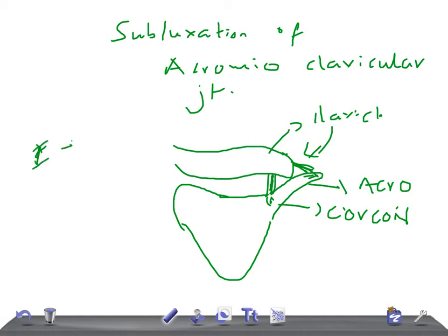Grade one is a minimal strain to the acromioclavicular ligament and joint capsule. Whereas in grade two, we have rupture of the acromioclavicular ligament and joint capsule.